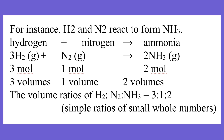Hydrogen plus nitrogen gives ammonia. Hydrogen is H₂, nitrogen is N₂, and ammonia is NH₃. The reaction is 3H₂ + N₂ → 2NH₃. The volumes are in simple ratios of small whole numbers: 3 volumes of H₂ to 1 volume of N₂ to 2 volumes of NH₃.